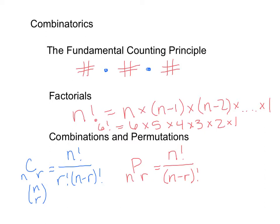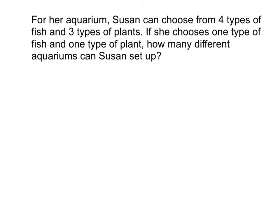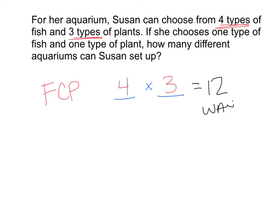Let's go ahead and use some of these — they're really a lot easier once you see them in a situation. For her aquarium, Susan can choose from four types of fish and three types of plants. If she chooses one type of fish and one type of plant, how many different aquariums can Susan set up? We know the number of one thing and the number of another thing, and we want to know how many different ways we can pair these up. So this is a fundamental counting principle problem. We have four types of fish and three types of plants. When we multiply these out, we end up with twelve. There are twelve ways that she can set up her aquarium.